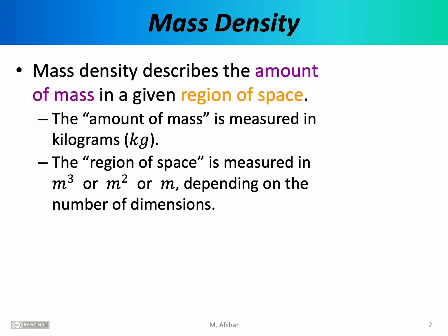Mass density is an important concept in physics and chemistry and many other scientific disciplines. Generally speaking, mass density describes the amount of mass in a given region of space. When we talk about the amount of mass, we're talking about kilograms. When we talk about a region of space, we're talking about something measured in cubic meters, square meters, or meters, depending on the number of dimensions that the object occupies.